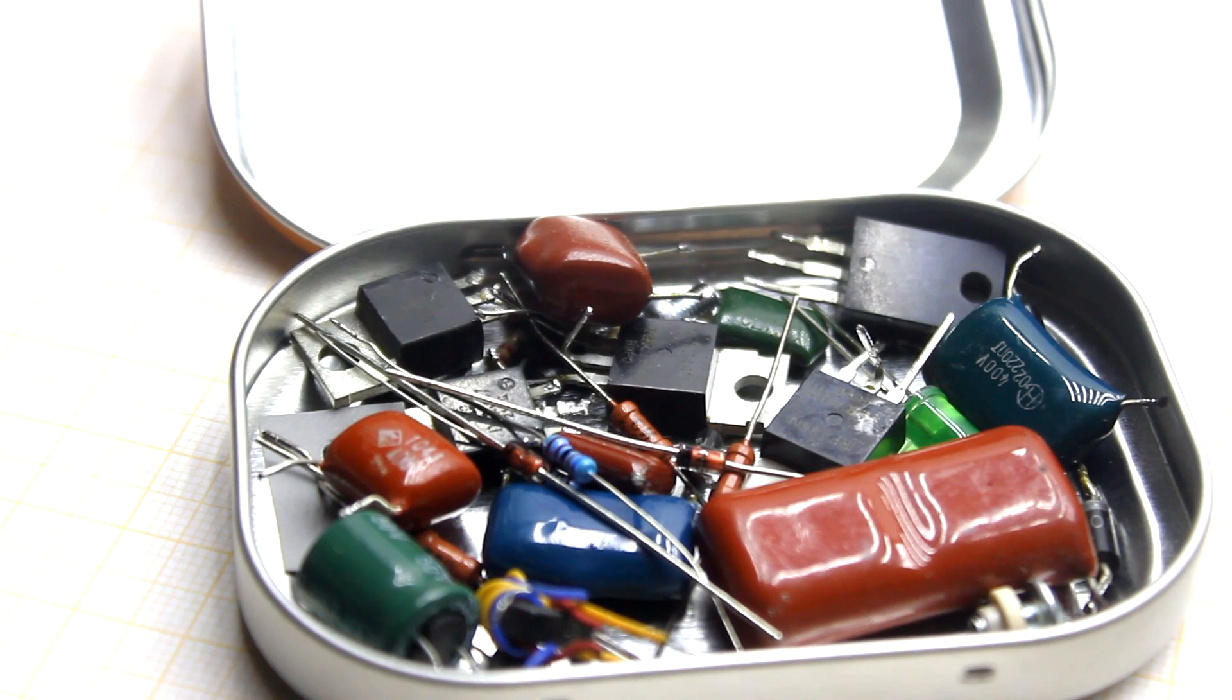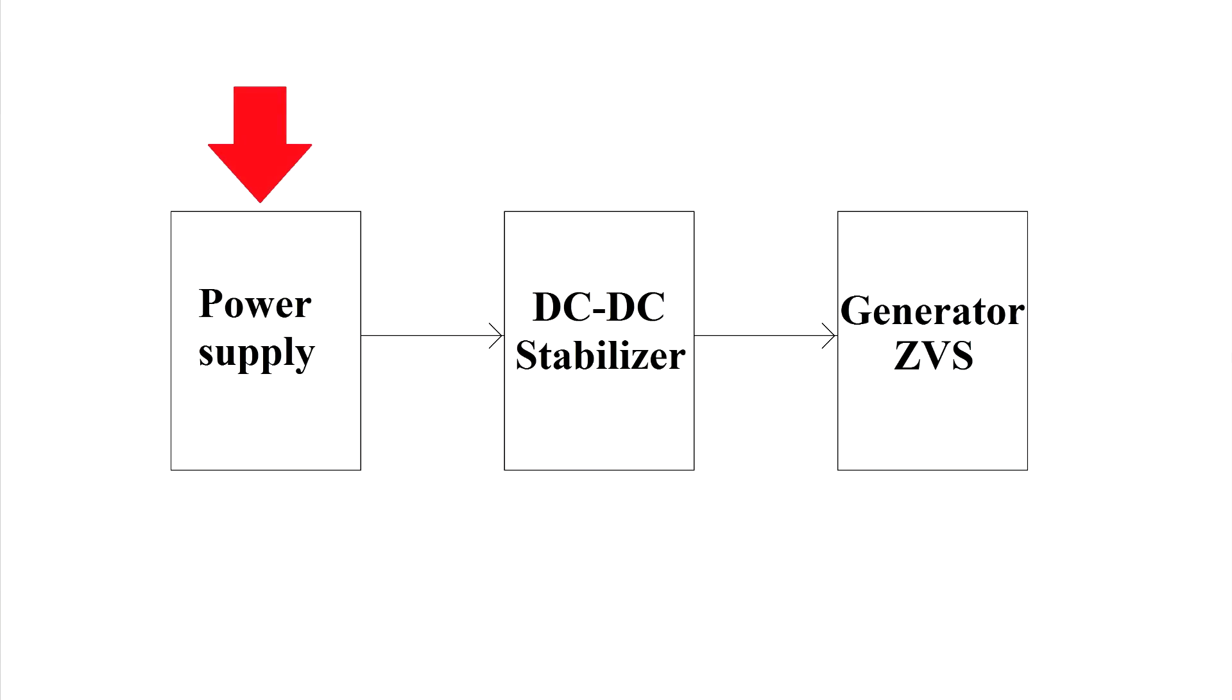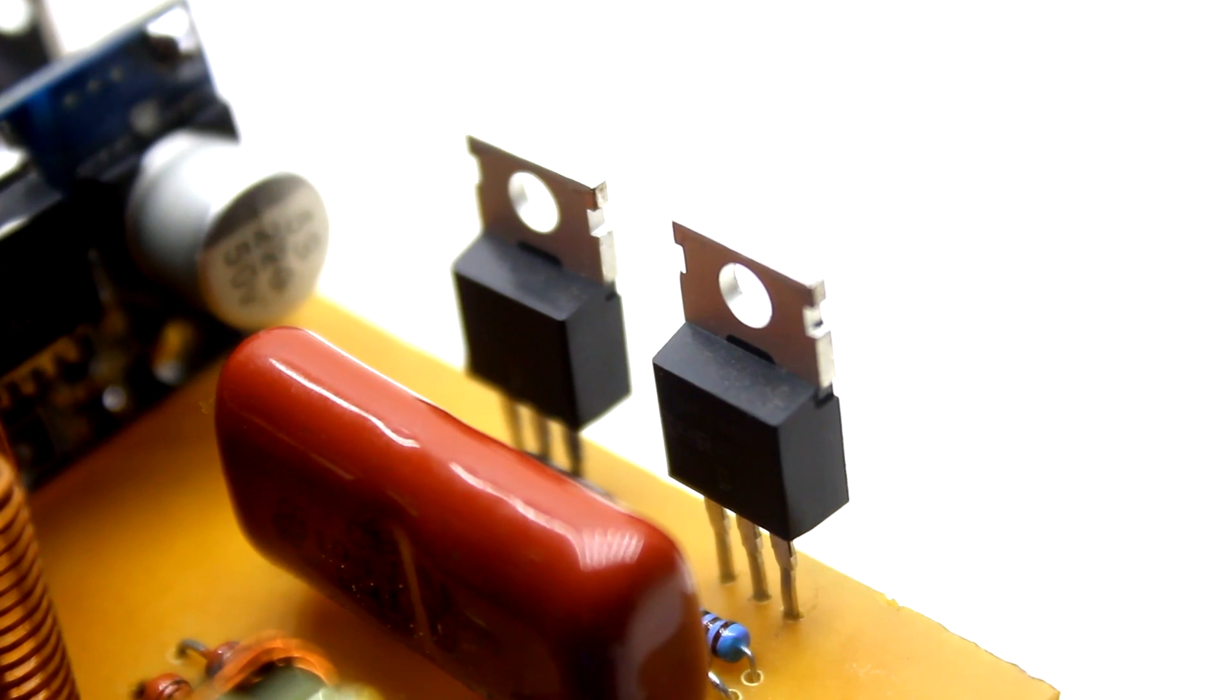Let's come closer to the point. The station consists of three parts: power supply, pulse step-down regulator with the possibility of output adjustment, and the generator itself on two powerful field effect transistors.